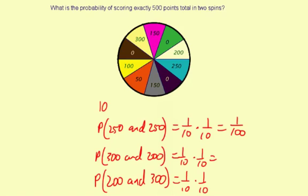It's going to be 1/100, 1/100, then another 1/100. So to add those together, you're going to have 3/100 as the total probability. So the probability of scoring exactly 500 points total in two spins is 3 out of 100.